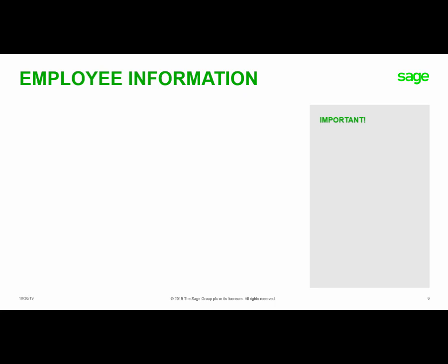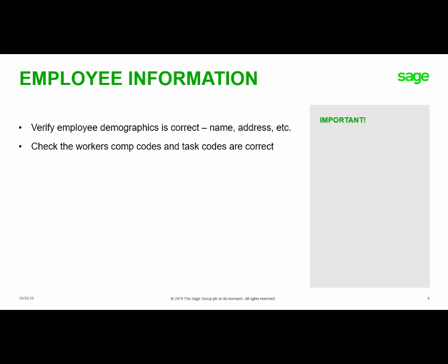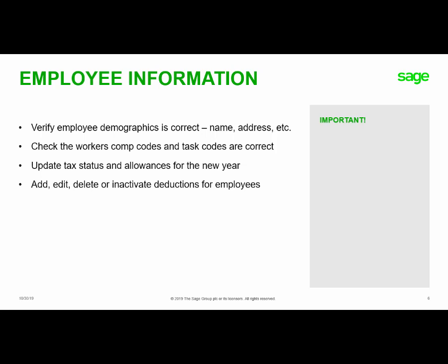Next, you should verify your employees' information. You'll want to verify that employee demographics are correct, such as their name and address. Check to make sure the workers' comp codes and task codes assigned to the employee are still correct. You will want to update the employee's tax status and allowances for the new year, and add, edit, delete, or inactivate deductions or other pays for employees. Use the employee master list to get detailed information about each employee.